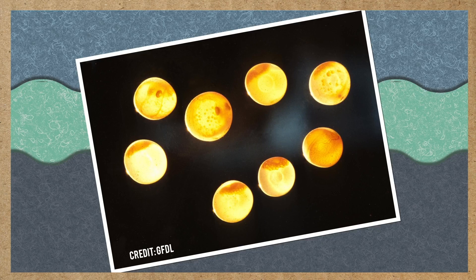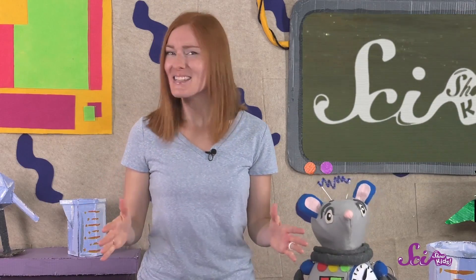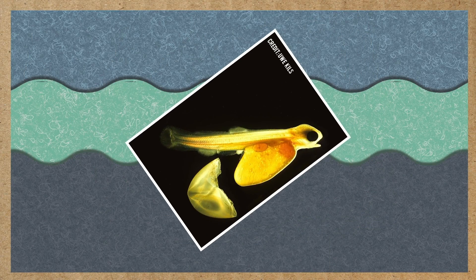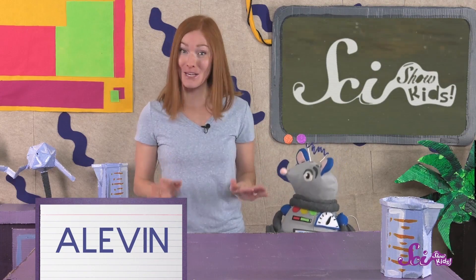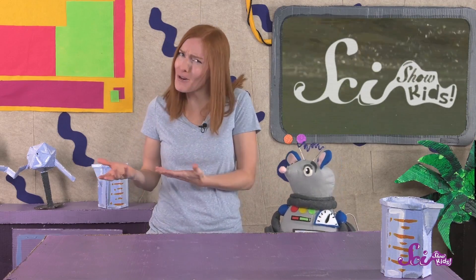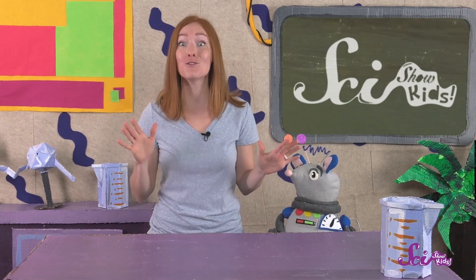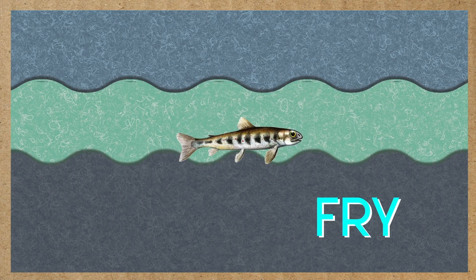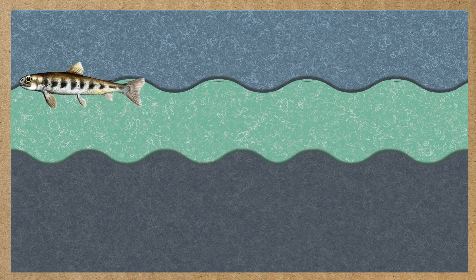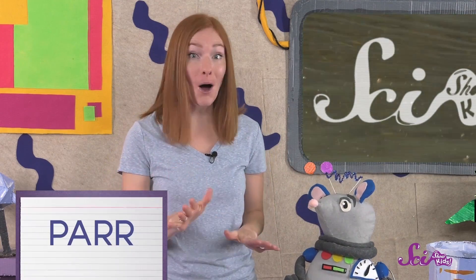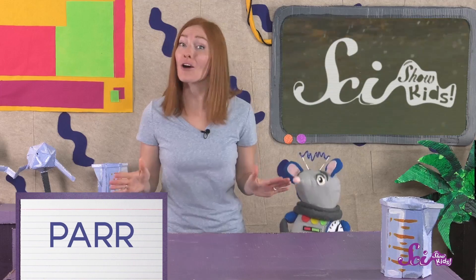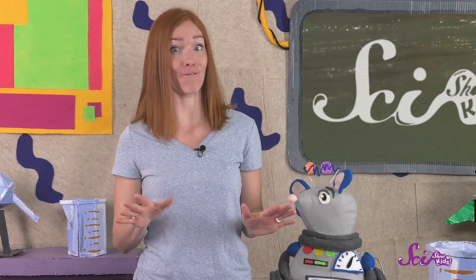Like all fish, salmon start out as eggs — that's the first stage. In the fall, an adult female salmon lays her eggs in a river or stream. The eggs stay in their safe little spot in the river all winter, and in the spring they hatch. At this stage the baby fish are still attached to the yolks of their eggs for food — this is when they get their second name: alevins. The alevins spend a few weeks or months close to where they hatched until they grow big enough to move on. In the third stage, the salmon is called a fry — now it's ready to eat real food and swim, though it sticks to the stream it was born in.